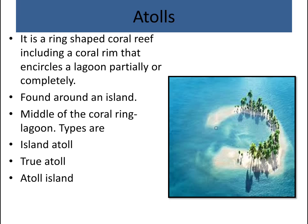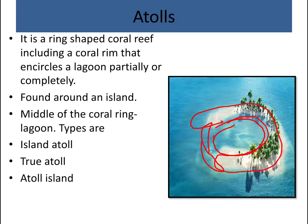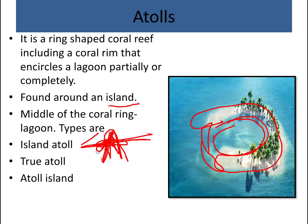Atolls are ring-shaped coral reefs that encircle a lagoon. The lagoon can be completely or partially covered. Atolls can also form around an island — these are called island atolls. A true atoll is ring-shaped with a lagoon inside. When an atoll grows large enough to appear like an island, it is called an atoll island.